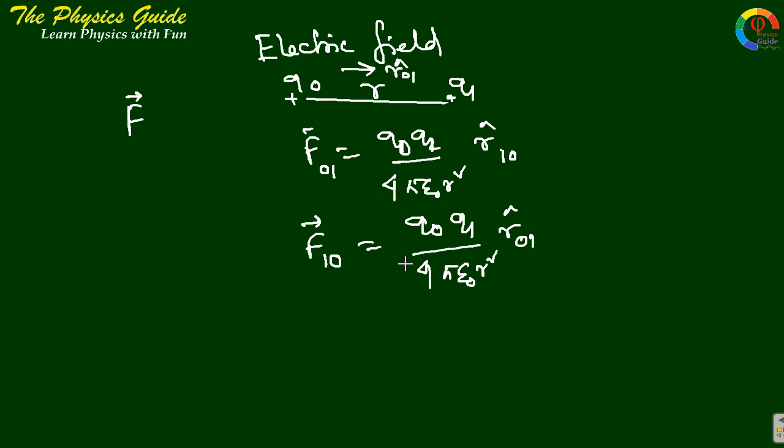If we take a unit charge, that is if we take Q1 equals to 1 unit of charge, then this gives, if Q1 equals to 1, Q0 divided by 4πε₀R² times R01. This is the electric field due to charge Q0 at the point R.